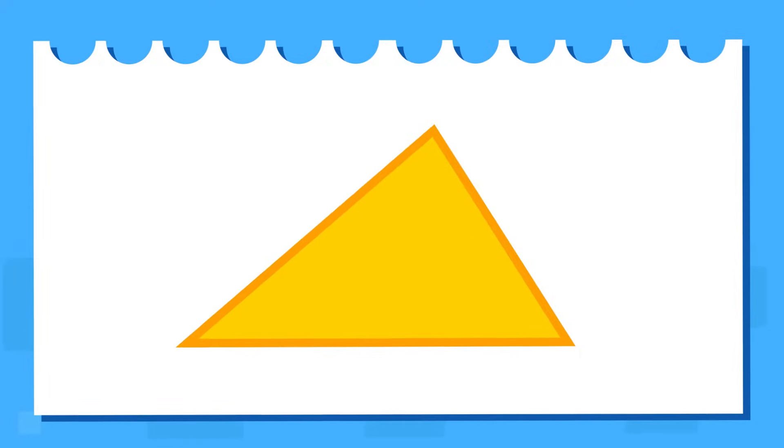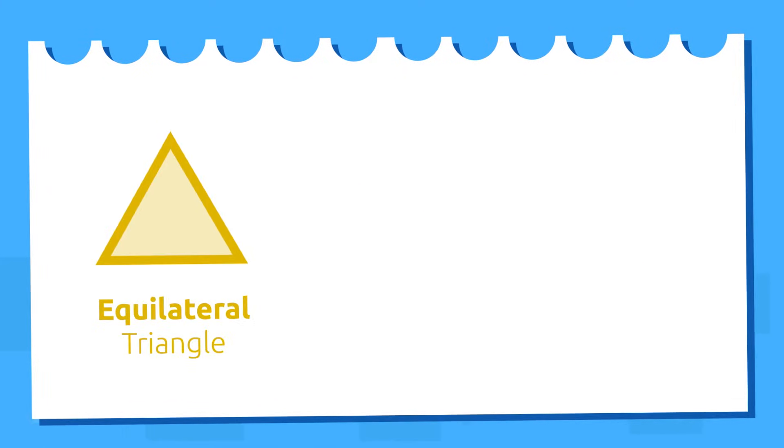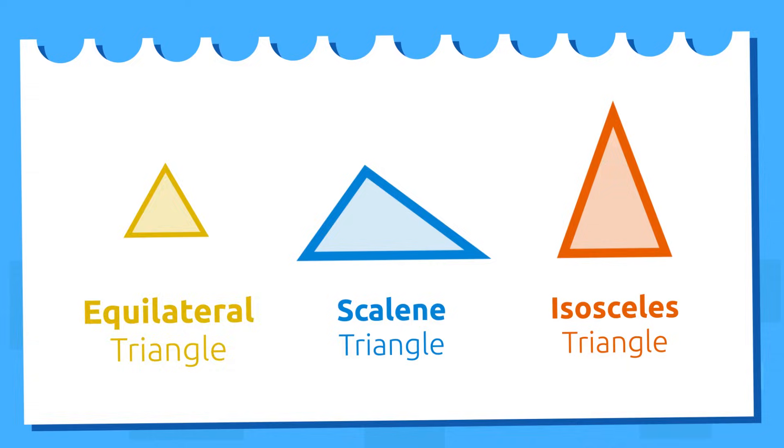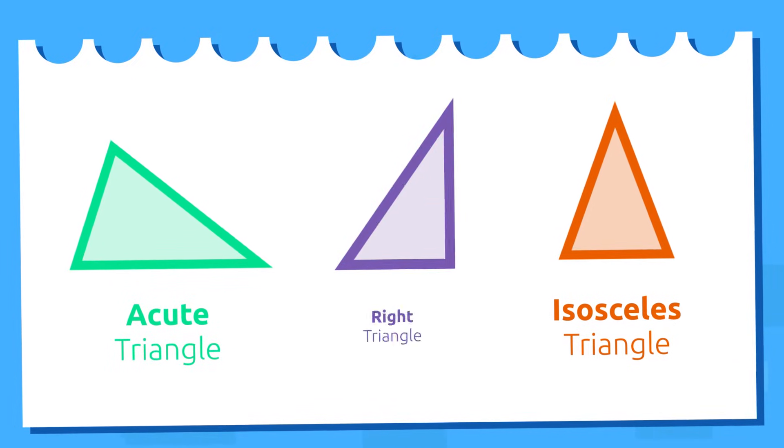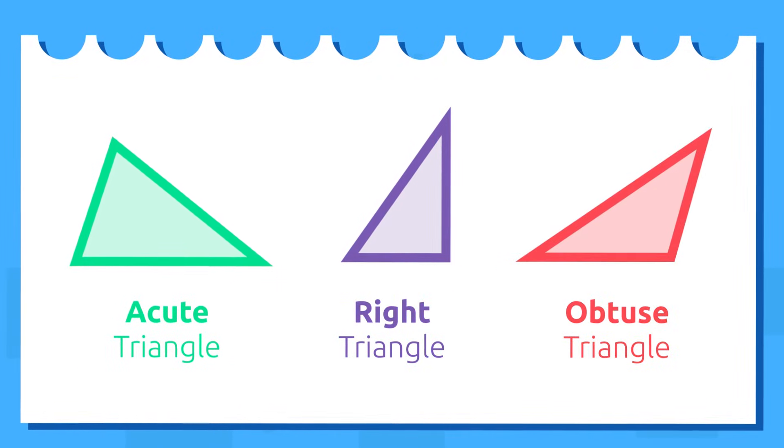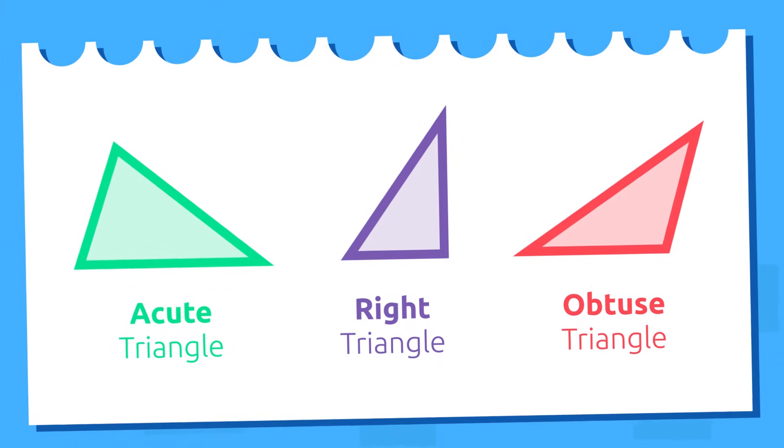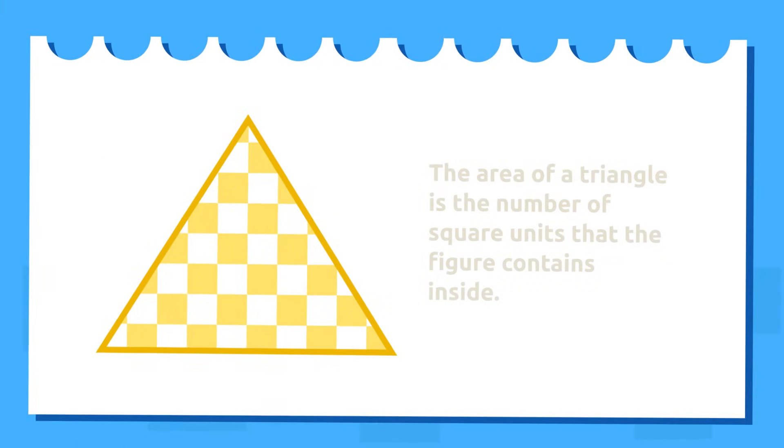As you know, there are different types of triangles: equilateral triangle, scalene triangle, isosceles triangle, acute triangle, right triangle, and obtuse triangle. Today we will learn how to calculate the area of all of them.